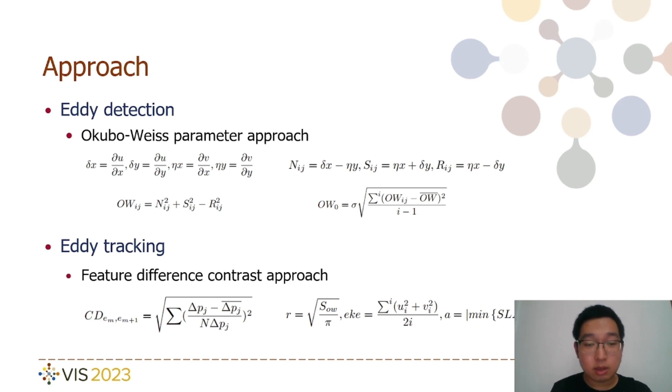Here, U, V, X, Y represents the zonal velocity, zonal direction, and meridional direction, respectively. The OW parameter can be formally defined based on these components. Eddy detection is performed by comparing the OW value with the predefined OW threshold value for each coordinate. Typically, the region of eddy that meets the criteria is the region where the OW value is less than the OW threshold value.